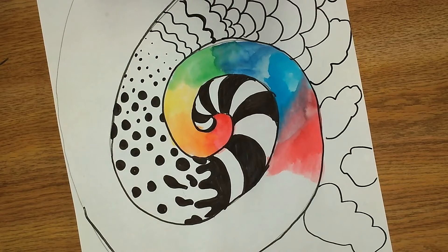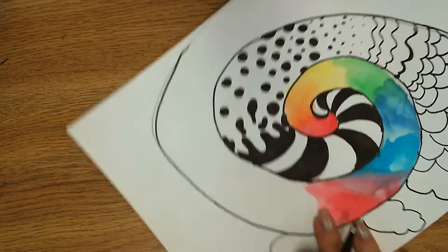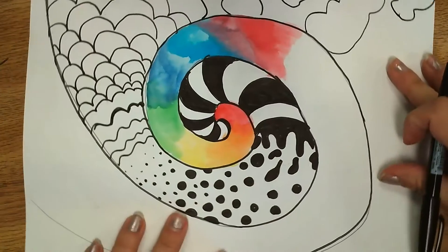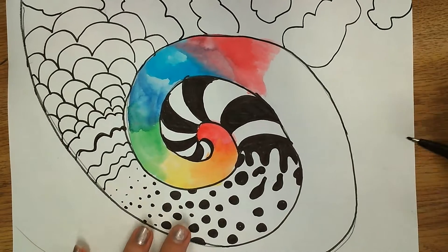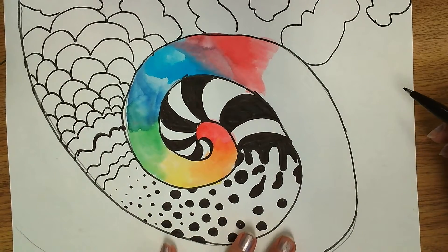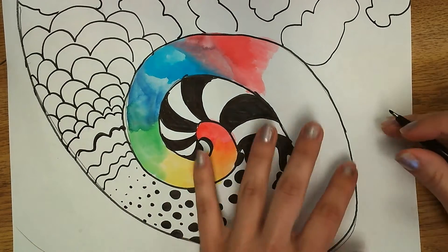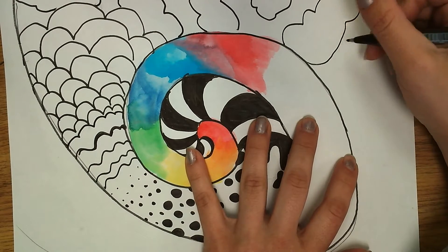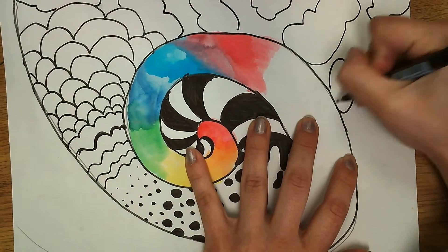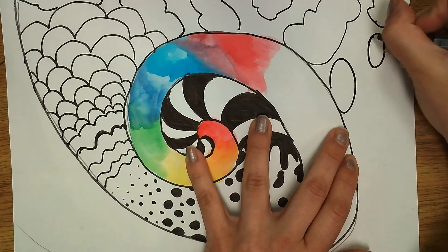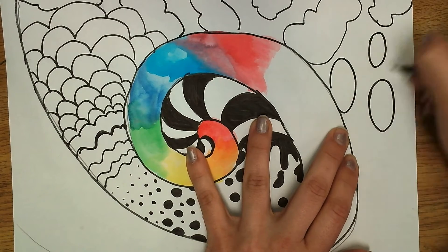There we go. And then maybe I could do some other type of shape. So I'm just going to turn this maybe this way you can see it. So now I'm going to do some type of other shape here.